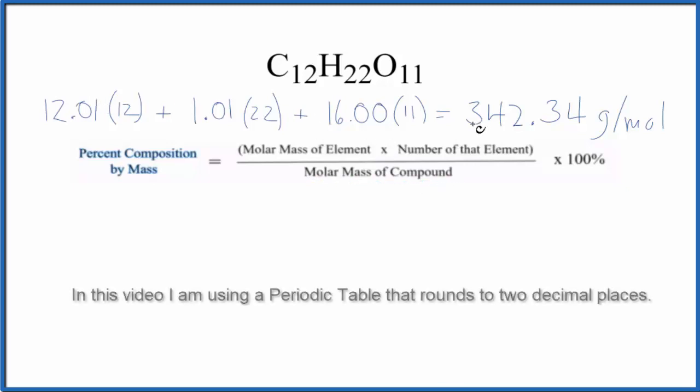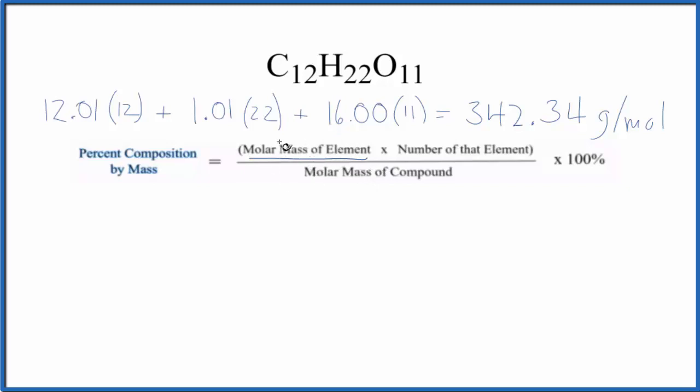So I've done that here, and I end up with 342.34, the units are grams per mole. So our molar mass for sucrose, we have that. That's going to go here on the bottom, the denominator. Now we can work with each element. We're going to find the atomic mass, or the molar mass for each element, multiply it by the number of the element.